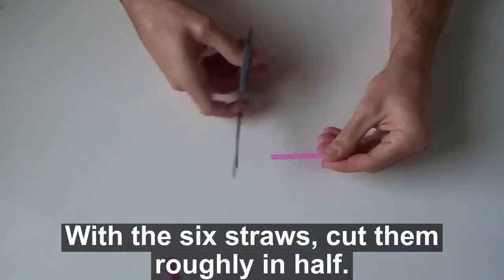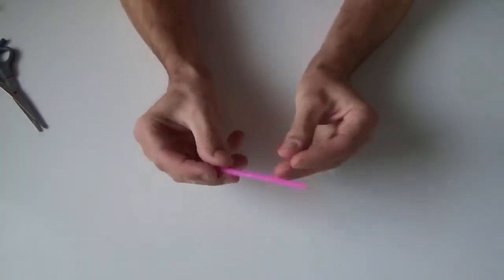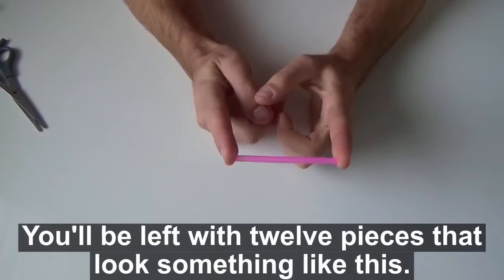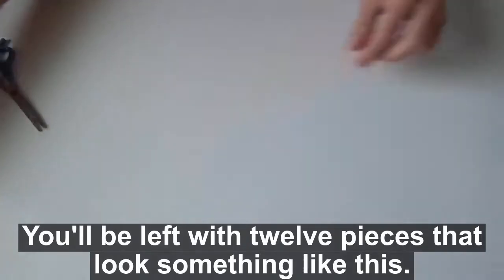With the six straws, cut them roughly in half. You'll be left with twelve pieces that look something like this.